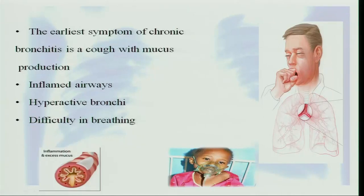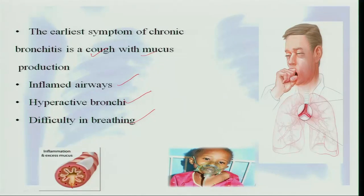The earliest symptom of chronic bronchitis is cough with mucus, due to inflamed, hyperactive bronchi and difficulty in breathing. There is excess mucus visible in the airway, which also becomes very small. The person starts coughing because all the airways have become blocked, and for difficulty in breathing, sometimes an oxygen mask may need to be given to relieve symptoms.